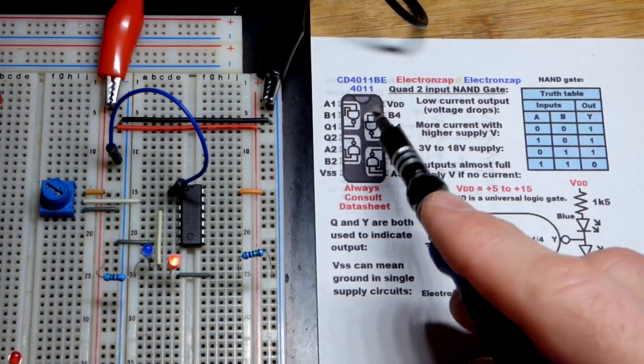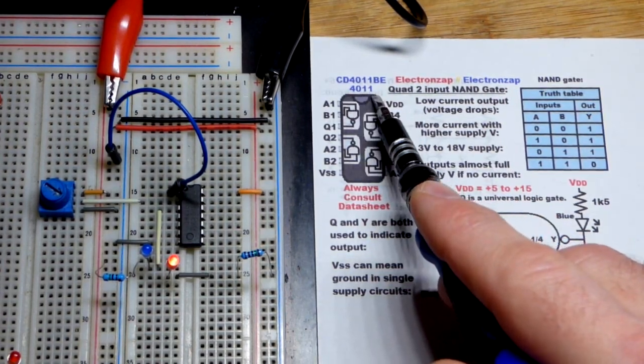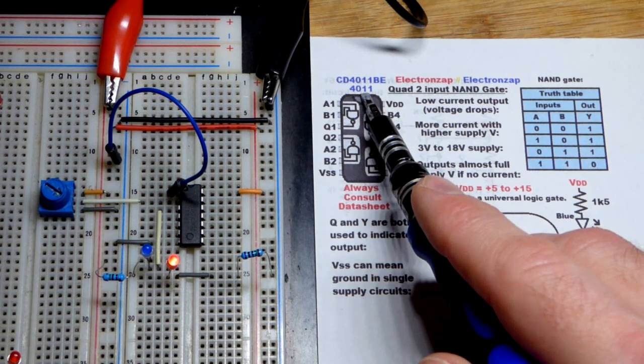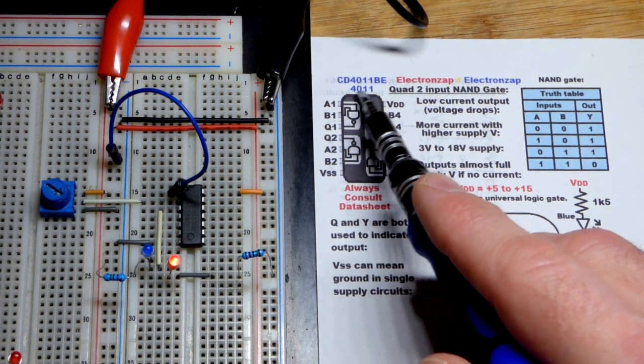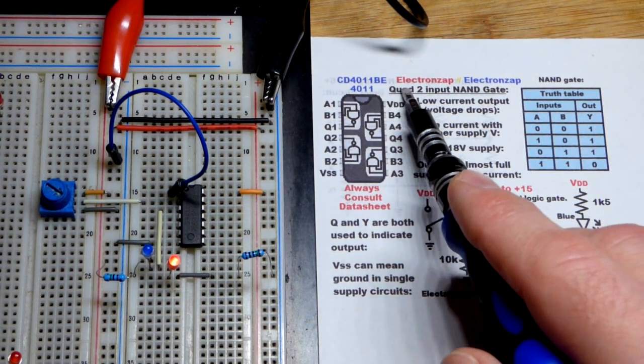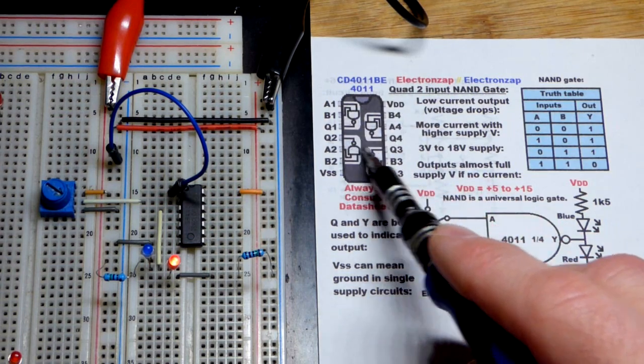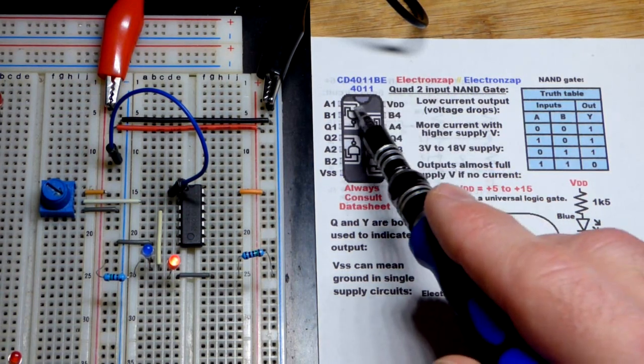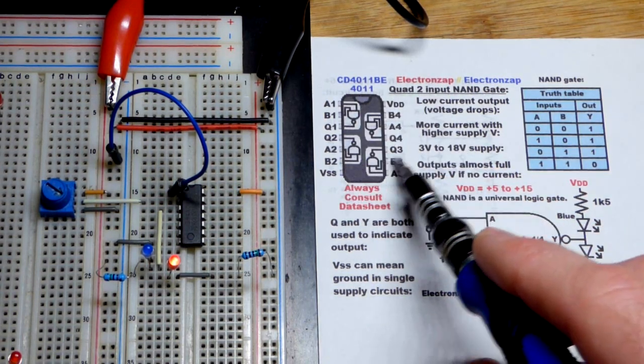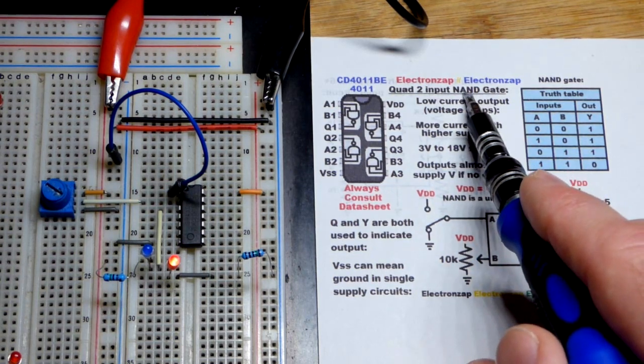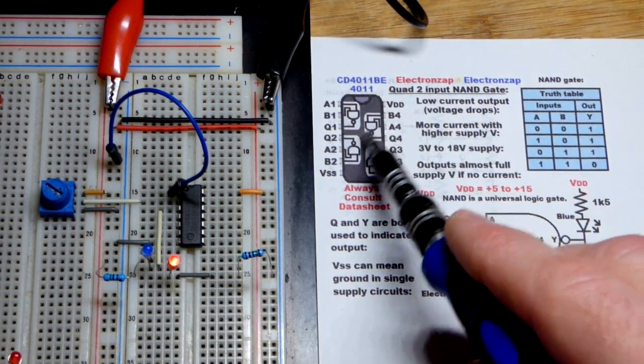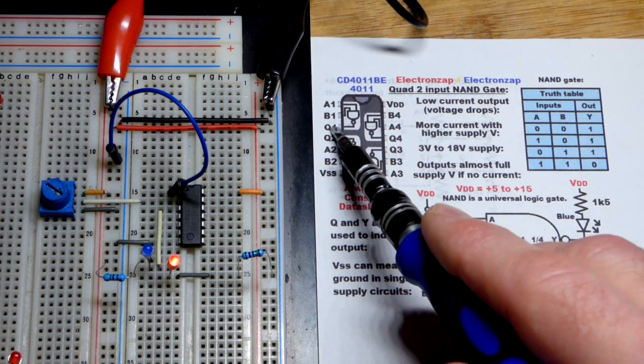In this video we're going to look at the 4011 integrated circuit. It's a 4000 series IC, and the 11 means it's a quad - there are four of them. They have two inputs, A and B, and they are NAND gates. That is the NAND gate symbol right there, and Q means it is the output.